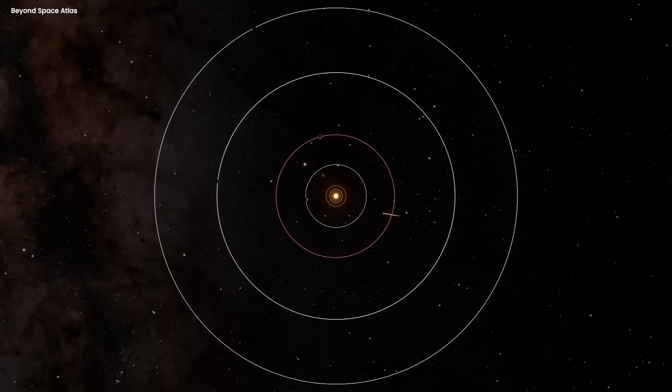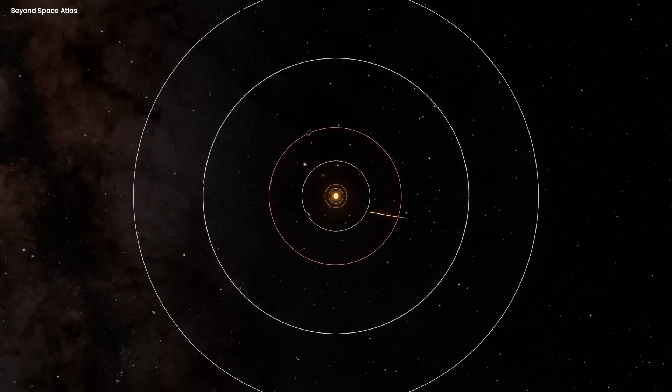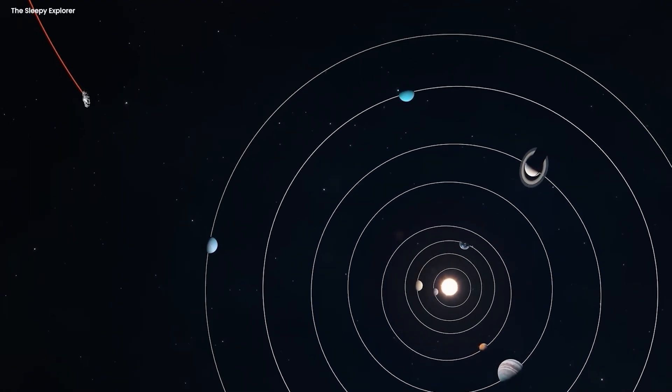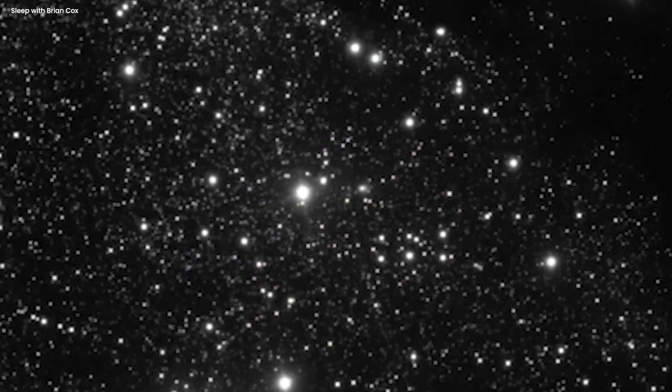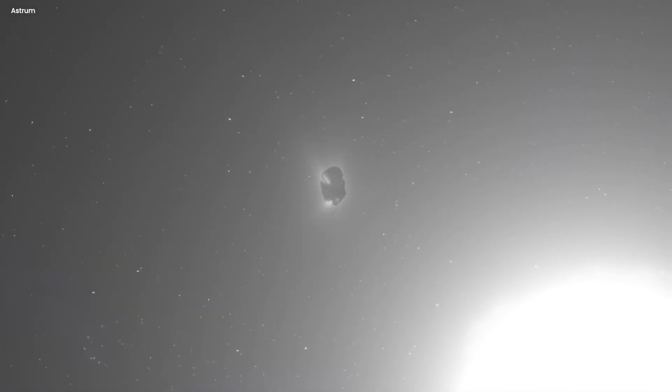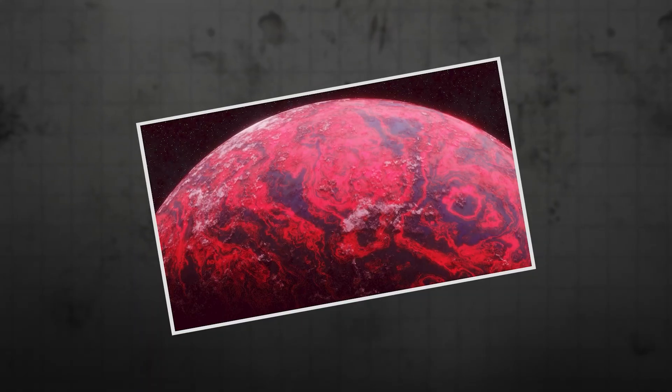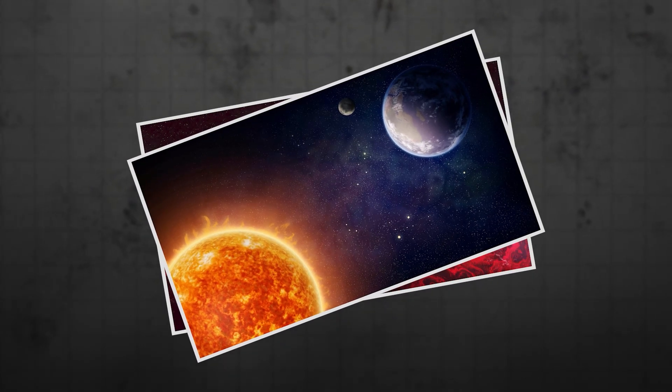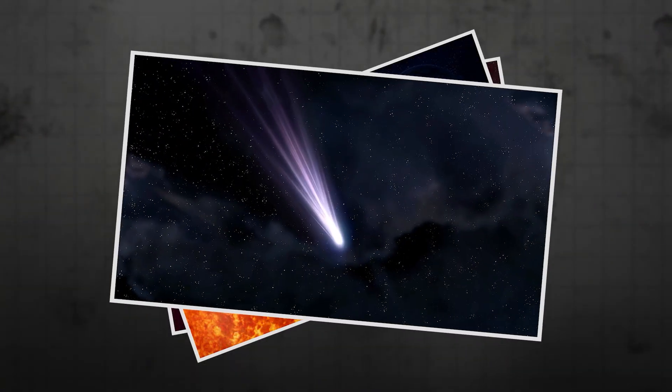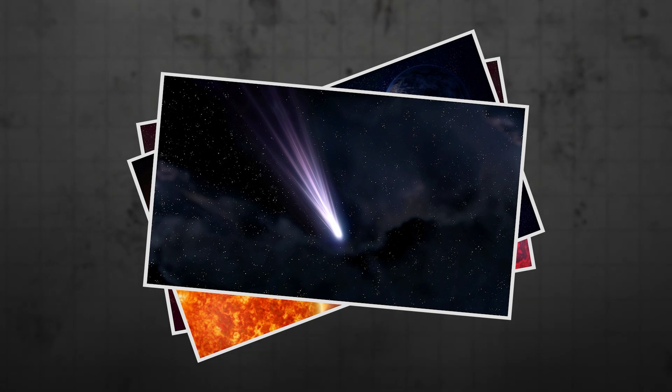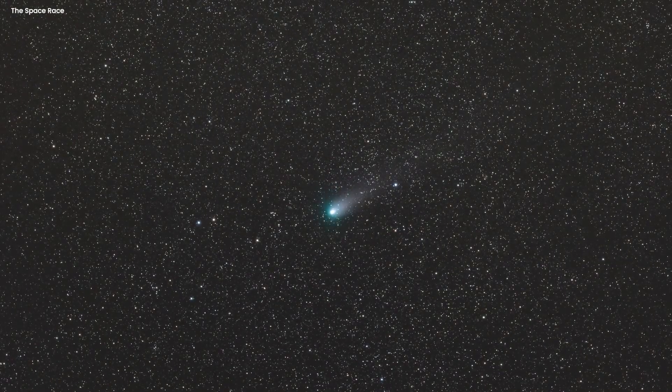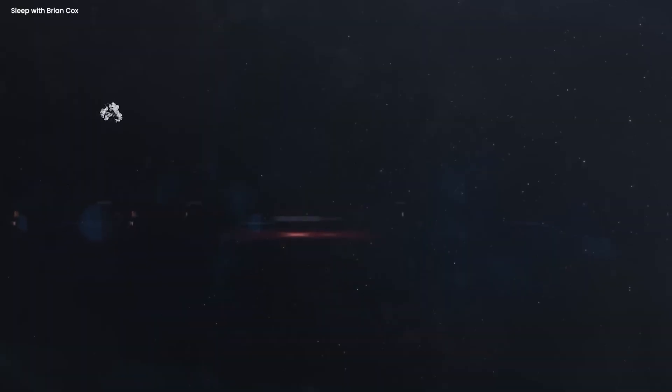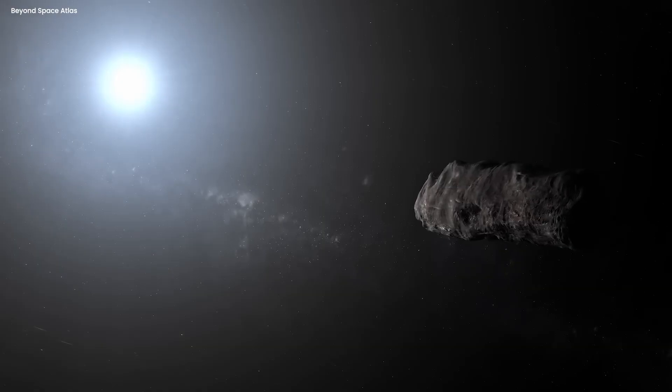But it gets weirder, because we can actually trace the path of 3I Atlas through the solar system and see which planets it's been getting close to along the way. And when you do that, a pattern starts to emerge. Back on October the 3rd, 3I Atlas flew within 28 million miles of Mars. That's 0.19 astronomical units. Pretty close. Close enough to get some good observations of the red planet. Then it continued on toward the Sun and made its perihelion, its closest approach to the star on October 29th. After that, it started heading back out into the solar system on its way out of town. And on December the 19th, it was technically at its closest distance to Earth. But again, that was 168 million miles away on the opposite side of the Sun.